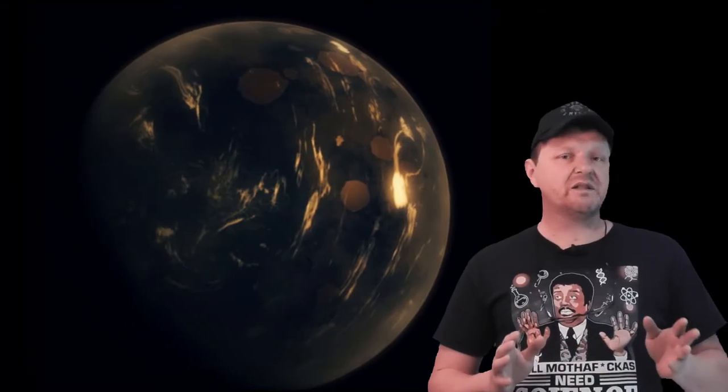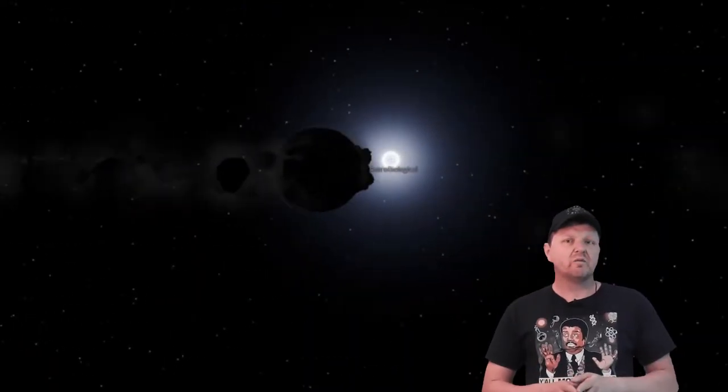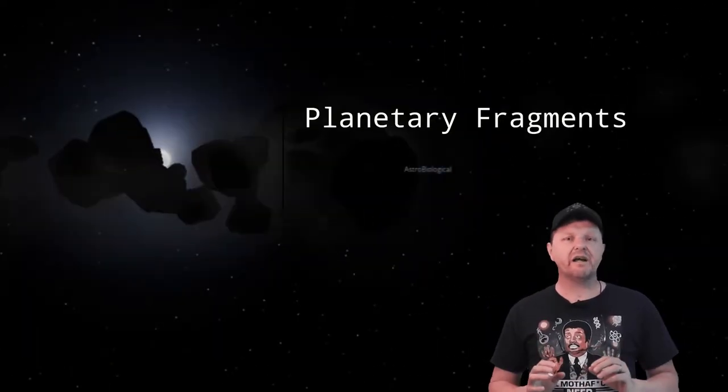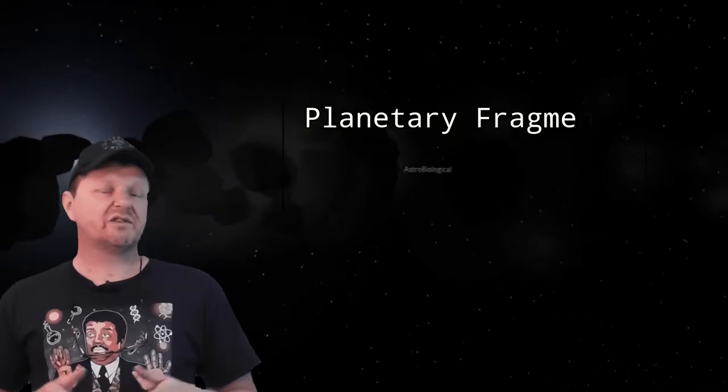This same principle has already been employed with debris orbiting the white dwarf star SDSSJI1043+0855. Again with the names. Despite the fact that white dwarfs are essentially dead stars, many have been observed with clouds of debris and dust around them. It's likely that this debris is the remains of the white dwarf's former solar system.